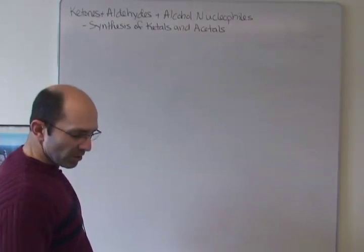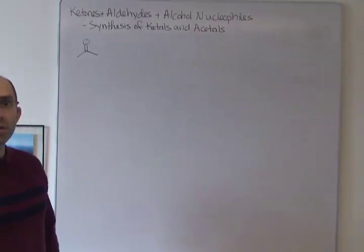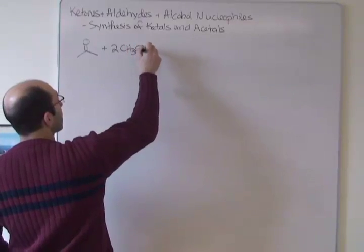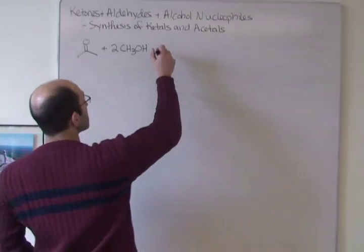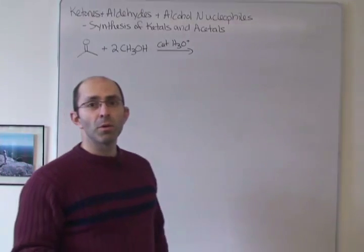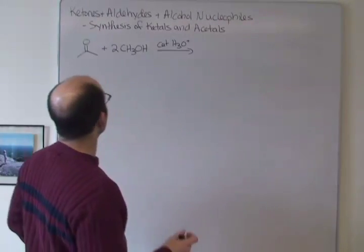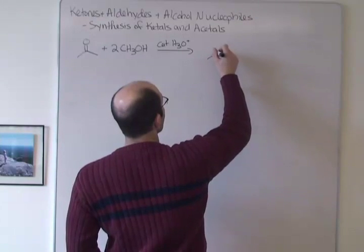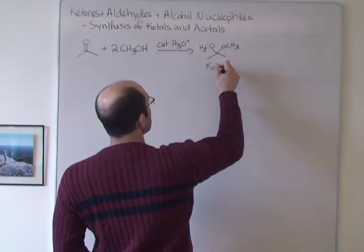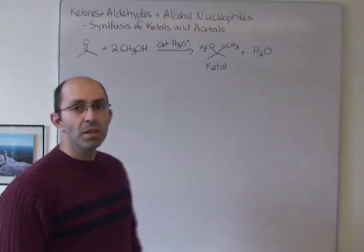Let's go through what one of these reactions will look like. So if we have just acetone — a very simple ketone — plus two equivalents of methanol, we run these reactions with some sort of catalytic acid. That's going to produce this molecule, which is called the ketal, plus water. And this is an equilibrium reaction.